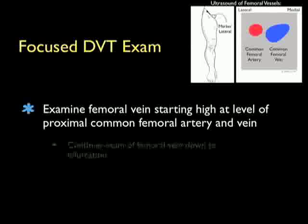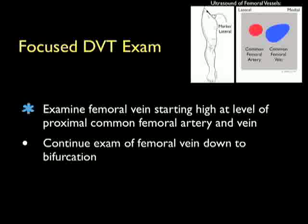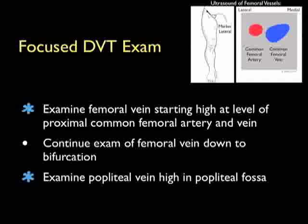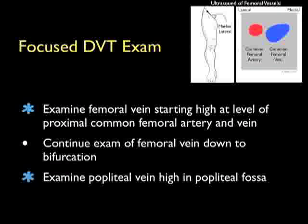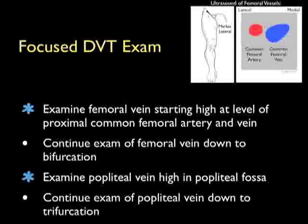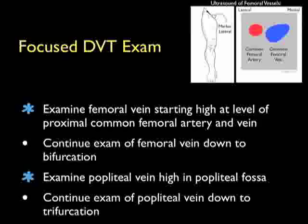In the focused DVT exam, we'll begin by examining the femoral vein starting high at the level of the proximal common femoral artery and vein, just below the inguinal ligament. We'll continue the exam of the femoral vein down about four to five centimeters through to bifurcation of the vein into the deep and superficial femoral veins. We'll then turn to examination of the popliteal vein, placing the probe high within the popliteal fossa, examining down to trifurcation of the vessel into the calf veins.